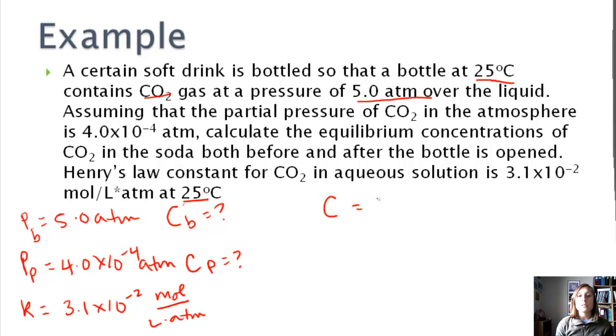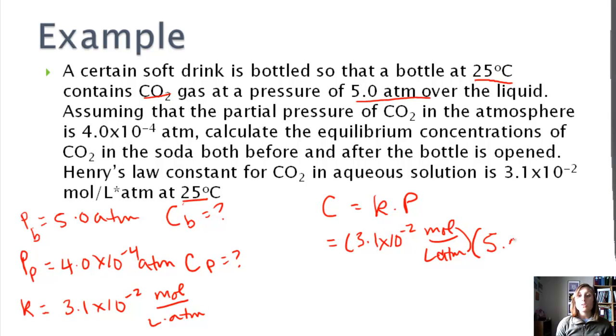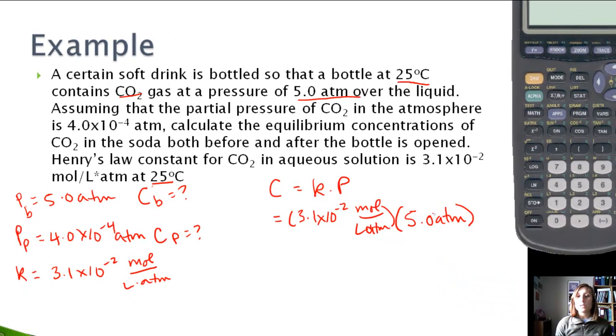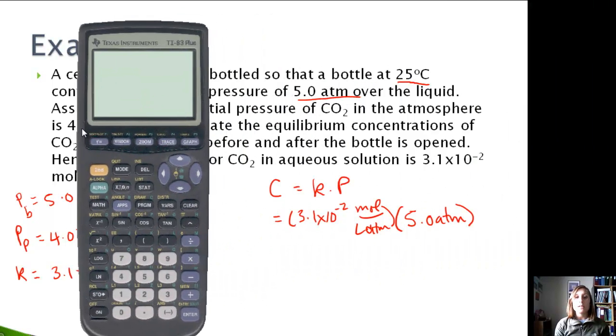So our equation is C equals K times P. So let's do the bottled one first. We're going to take our K value, multiply by our bottled pressure, which is 5 atmospheres. So keep in mind that if you are going to use this equation, because the units of K are moles per liter atmosphere, your pressure needs to be in atmospheres. If it's torr or something else, then you're going to need to change it. Okay, let's grab the calculator.